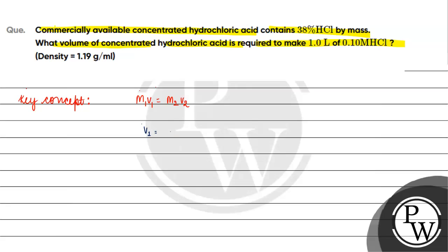M2 is given to us — M2 is 0.10 molar. V2 is given to us — V2 is 1 liter. Now, what do we need to find out? M1.